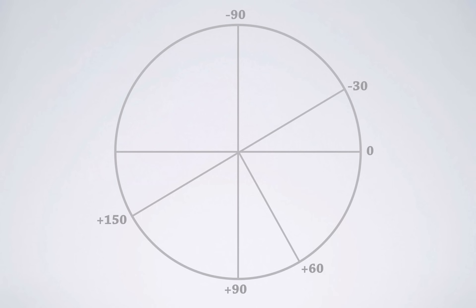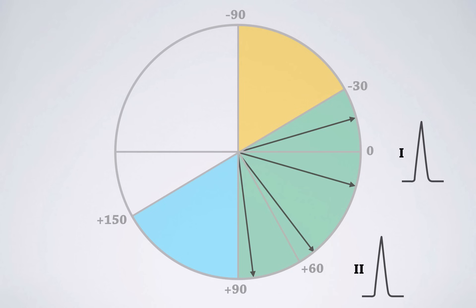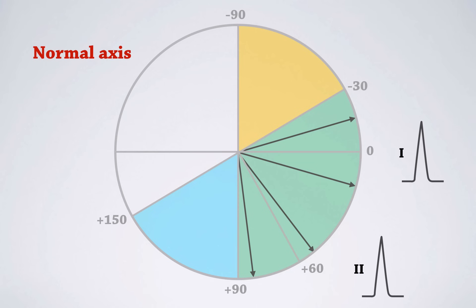If lead one is mainly positive, the cardiac axis lies somewhere in the direction of the yellow area. If lead two is also mainly positive, the cardiac axis must lie at the intersection of the yellow and blue areas — which is green. So the cardiac axis points somewhere in the green area, from minus 30 to plus 90 degrees. Since most vectors in humans point in that direction, this is called a normal axis. Terminology varies between medical schools and countries, but we will use the terms from English and American textbooks.